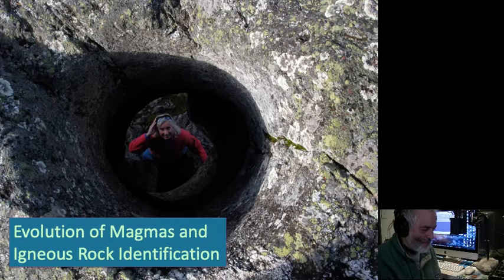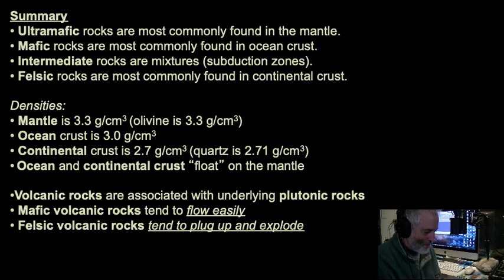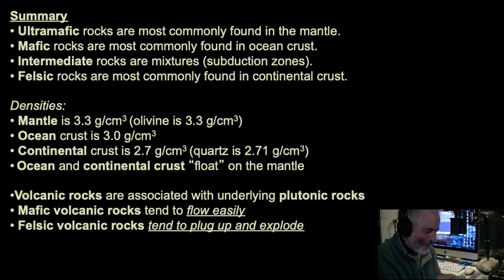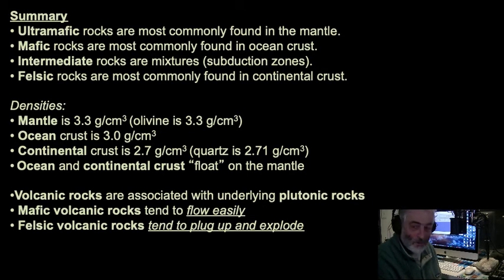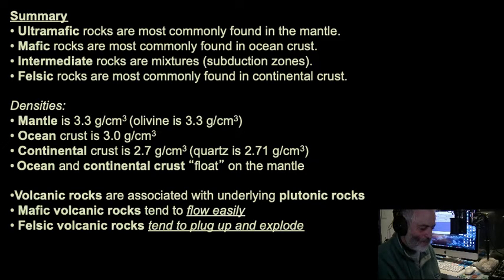I'm going to give a little summary first to make sure this all sticks. Bowen's reaction series gives us a lot of predictive capabilities about what kind of rocks we'll find. Ultramafic rocks are most commonly found in the mantle — they're denser and sink deeper. Mafic rocks are most commonly found in ocean crust. Intermediate rocks are found in subduction zones and volcanic areas. Felsic rocks make up most of the upper continental crust.